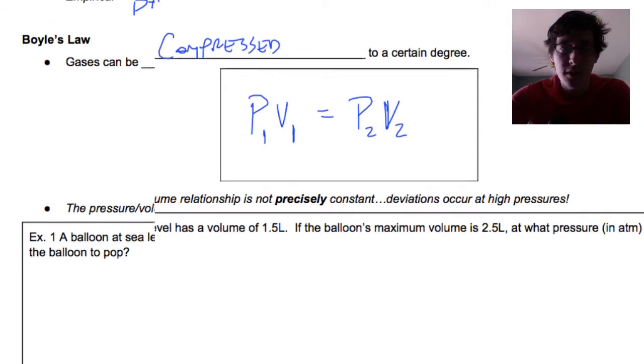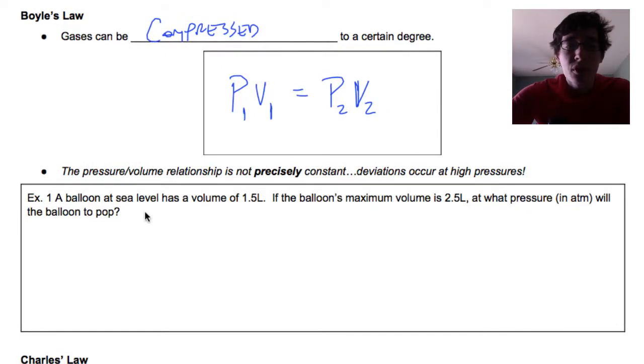So how do we use that? This is going to be our model for the rest of this section. A balloon at sea level, so this is pressure one, has a volume of 1.5 liters, so this is volume one. If the balloon's maximum volume is 2.5 liters, so this is volume two, what pressure, so P2 is our question mark, will the balloon pop? We can take this data and put it into Boyle's law.